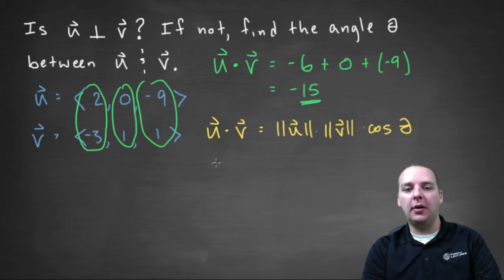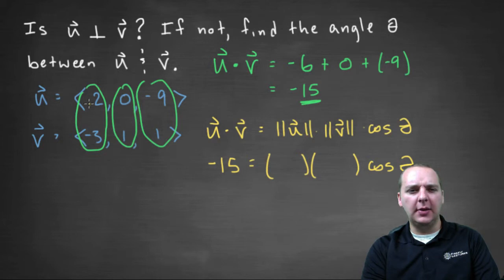So we have the dot product, that's negative fifteen. Then we need the magnitude of u, the magnitude of v times the cosine of the angle between them. The magnitude of u is the square root of eighty-five, if my math is right.